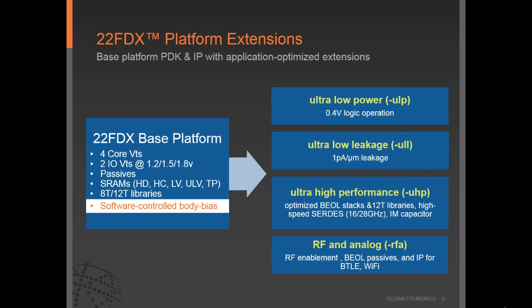For designers who want to further differentiate their designs, there are application-optimized extensions available with this technology. These include 22FDXULP, the ultra-low power extension, which provides logic libraries and memory compilers optimized for 0.4 volt operation. The 22FDXULL ultra-low leakage extension brings in an expanded device suite capable of achieving one pico-amp per micron leakage. 22FDXUHP, or ultra-high performance, leverages overdrive and forward body biasing capabilities to maximize performance in a turbo or burst mode, with high-performance libraries, high-speed interfaces, and back-end-of-line stacks optimized for computing architectures.